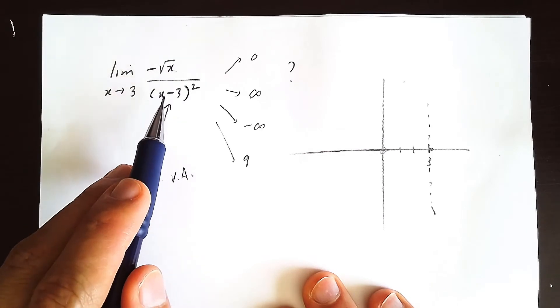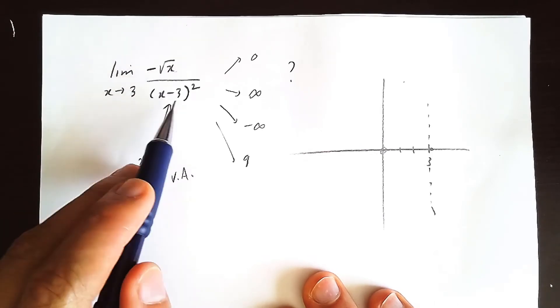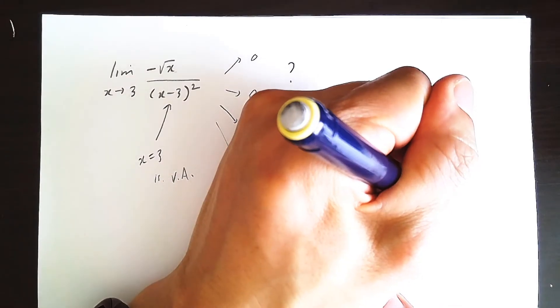Reasonable size number divided by a very small number, a positive number. It's going to end up being infinity. So we have a negative sign in front of the infinity, so it's negative infinity, the y value is going to be here.